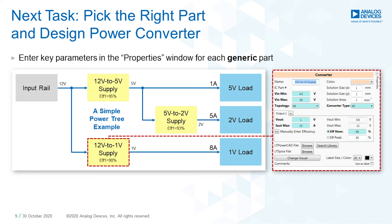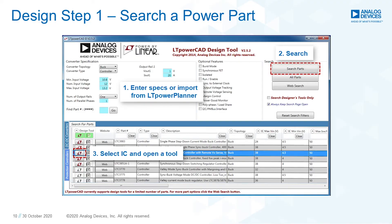The next task is to pick the right part and design the power converter. To get a list of the appropriate parts for each block, you can click on the block symbol, which opens a window where you can enter the appropriate parameters and then search the library of ADI power products that fit the required criteria. Once you have picked the part from the database, the block parameters will be updated. Once the block diagram is complete, it's time to move on to the first design step using LT PowerCAD. If you've not created a block diagram, you can enter the part number directly, enter the design criteria for the block, and then select a part from the database, or simply click on the system diagram block to open up the design tool.